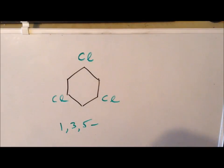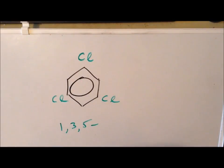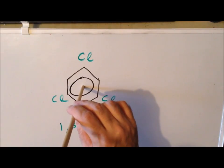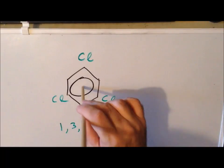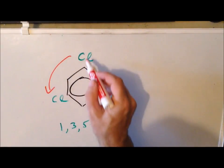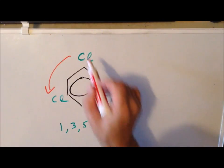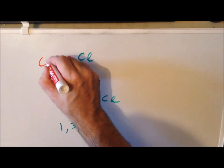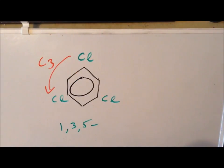We're interested in the point group assignment. As is our approach with benzene, we first look for a high-order rotation axis perpendicular to the plane of the board. Here we do see something interesting: if I rotate by 120 degrees, it takes chlorine to chlorine, chlorine to chlorine, chlorine to chlorine, hydrogen to hydrogen, and so on. So we actually do have a C3 high-order rotation axis for the 1,3,5-trichlorobenzene.